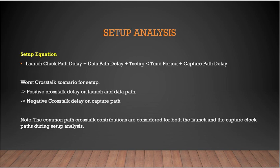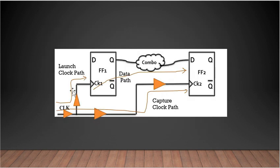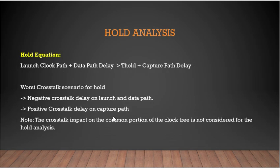That's because for setup, the launch and capture clock edges are different — the launch happens at one time and the capture happens at another time. So it is possible that during the launch time crosstalk is present, but during the capture time it is not, or vice versa. Since the timing is different and the edges are different, the crosstalk effect on the common path is considered for setup analysis. But for hold analysis, we do not consider it because it happens on the same edge — during the same time. So while doing hold analysis, the crosstalk contribution from the common clock path is removed.